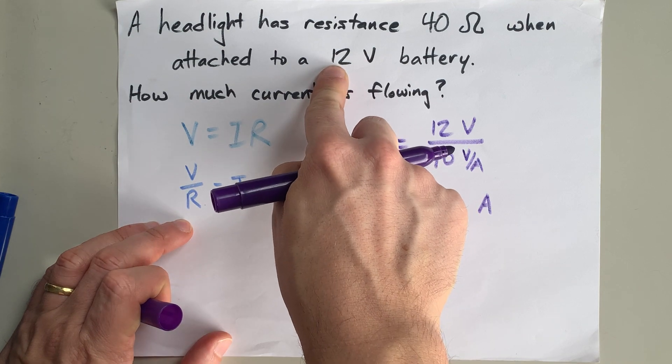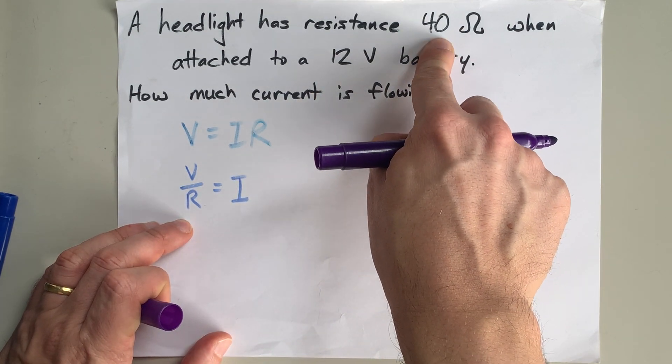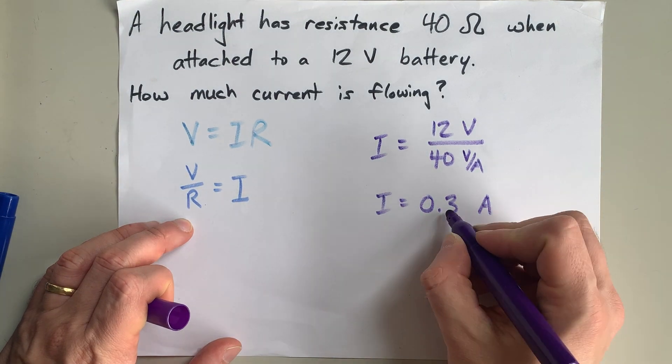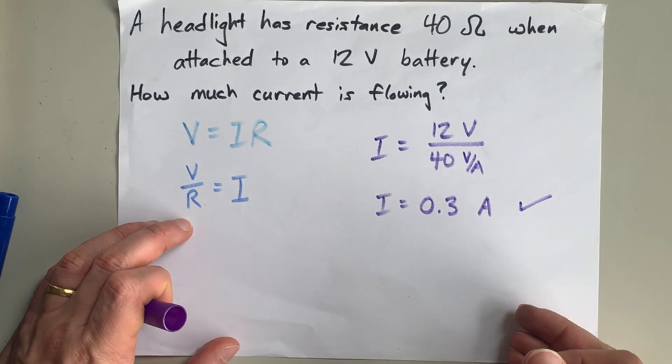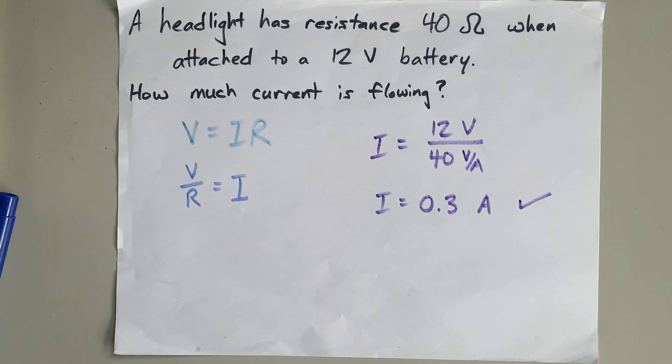Now, two significant figures. This is only one significant figure because there's no decimal written there. So, one significant figure is good for the current here. The current in this question is 0.3 amps.